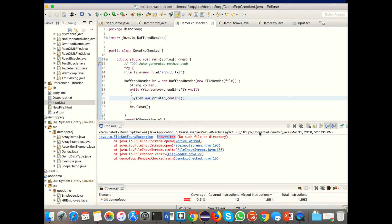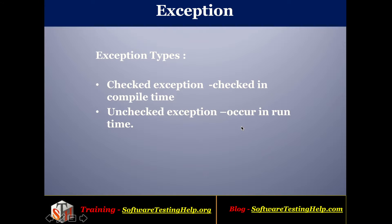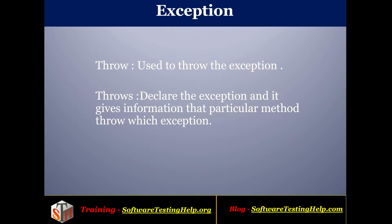Finally, we will see about two keywords useful for exception handling: throw and throws. The throw keyword is used to throw an exception when an abnormal event occurs — you instruct the compiler to throw that particular exception. The throws keyword is used to declare an exception on a method, for example 'methodOne throws SomeException', giving instruction to other developers that this method will throw this exception and they must handle it. So if you call that method in your main method you have to write a try-catch block for it.